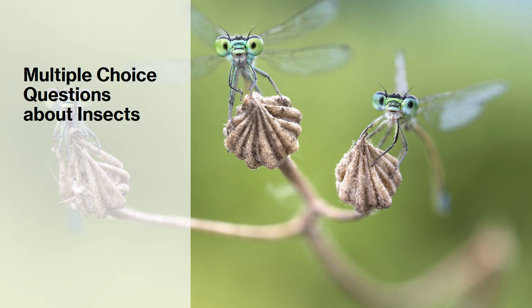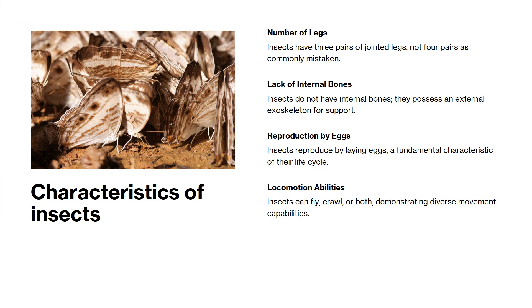We'll start with multiple choice questions to test your knowledge about insect characteristics and how to identify insects among other animals. Insects have three pairs of jointed legs, not four. Unlike some other animals, insects don't have internal bones — instead, they have an external exoskeleton. They reproduce by laying eggs and can move by flying, crawling, or both.